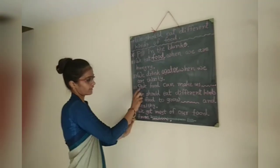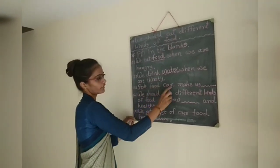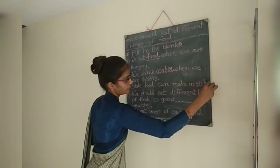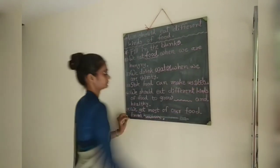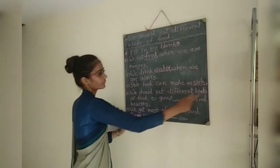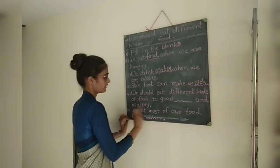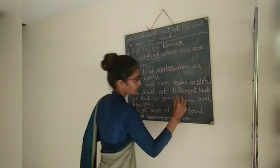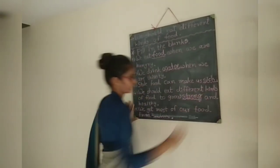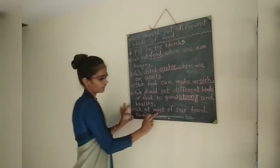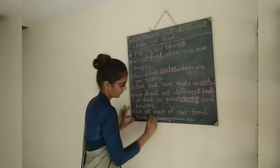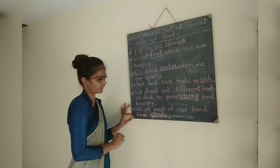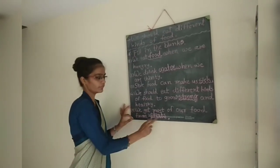Number 3: Stale food means not fresh. Stale food can make us sick — means we fall ill. So we should avoid stale food. Number 4: We should eat different kinds of food to grow strong and healthy. Number 5: We get most of our food from plants. For example, fruits, vegetables, wheat, and rice that we get from plants.